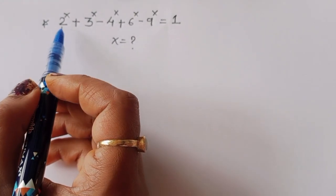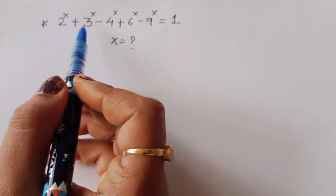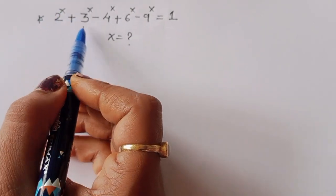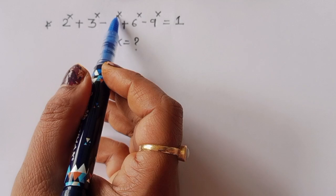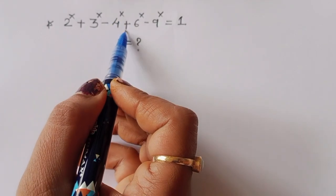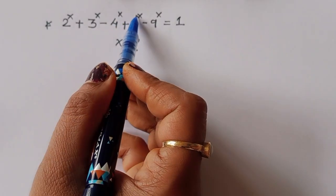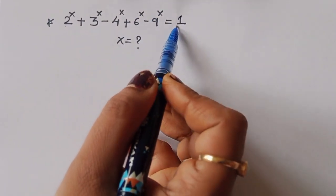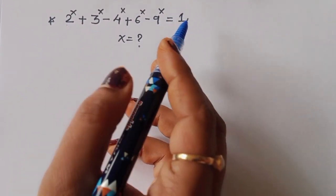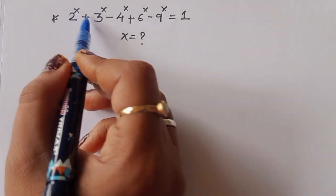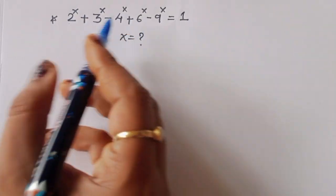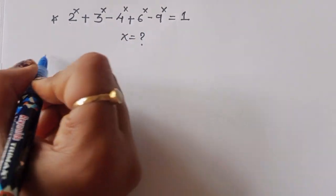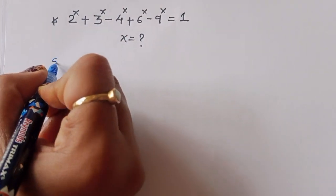The question is: given 2^x + 3^x - 4^x + 6^x - 9^x = 1, we have to find out the value of x. Let's see the solution.